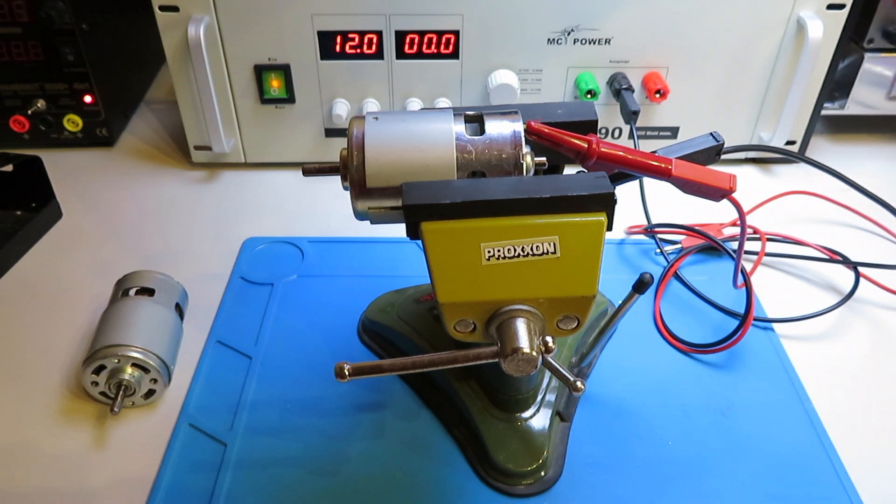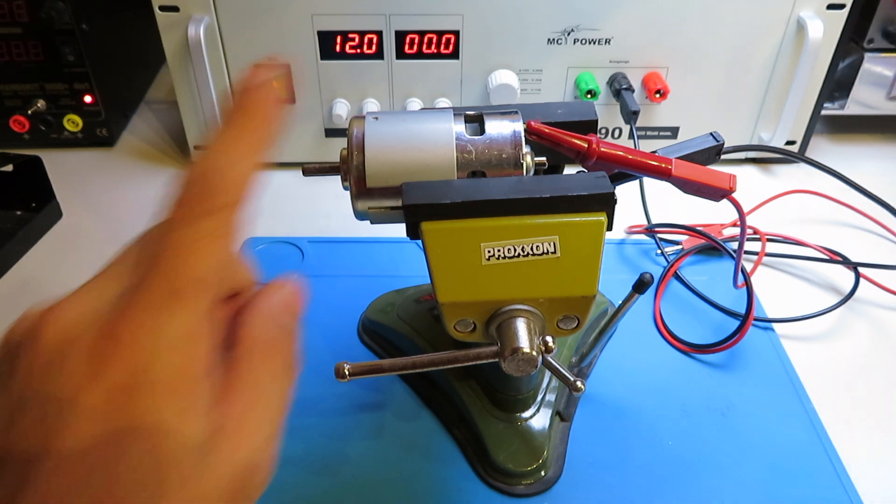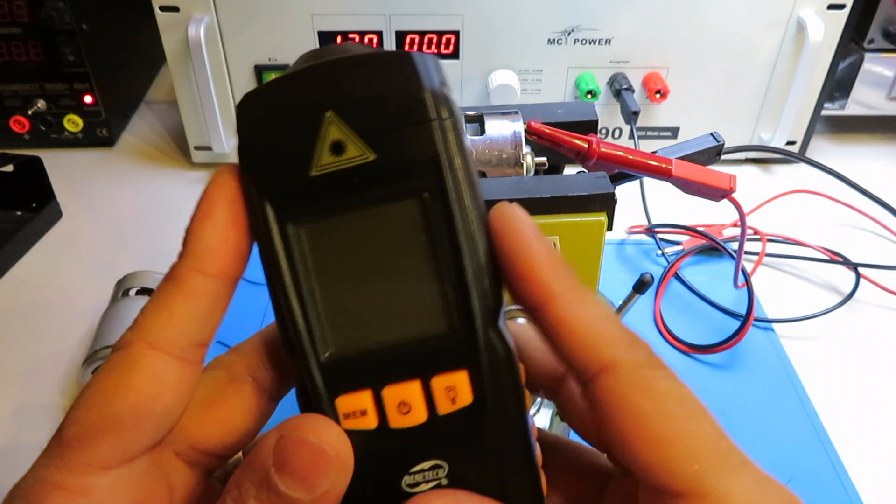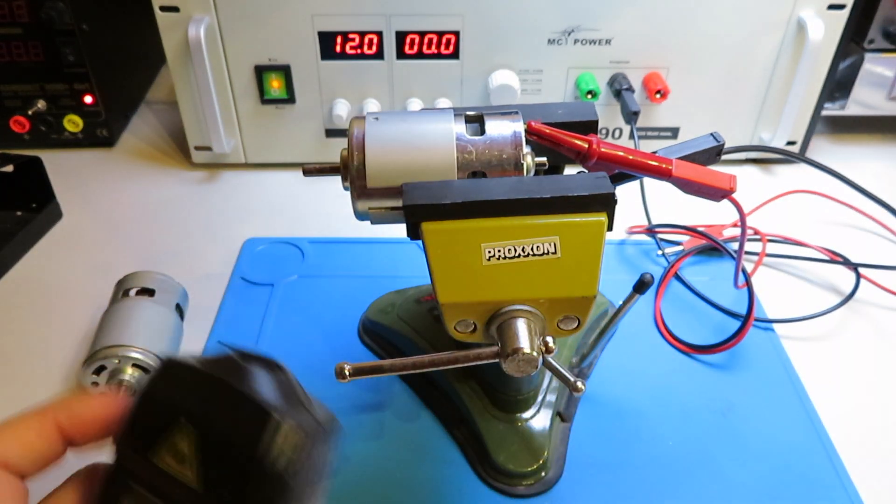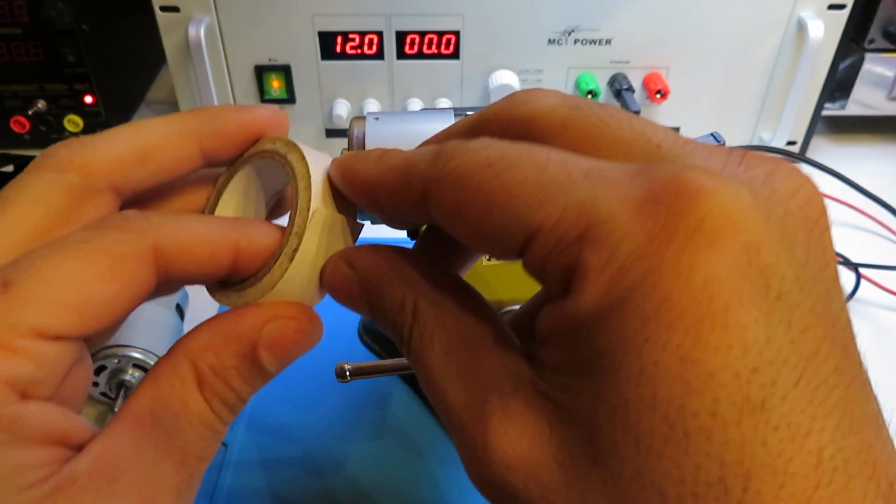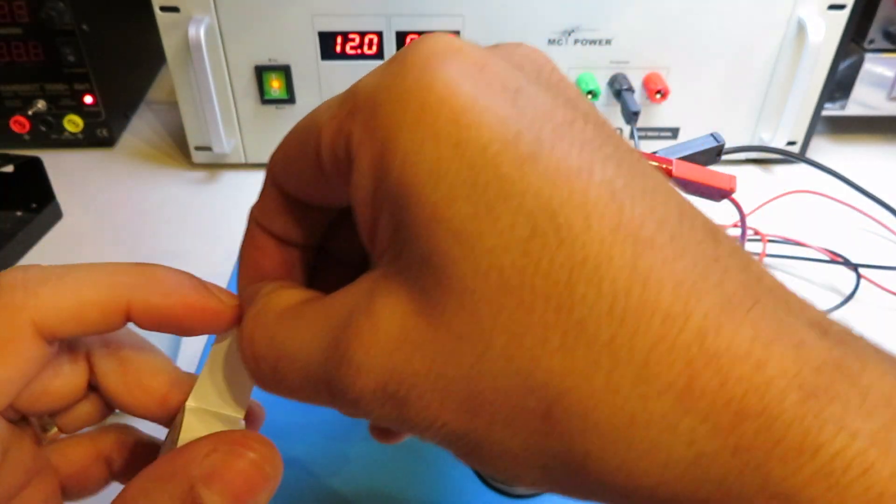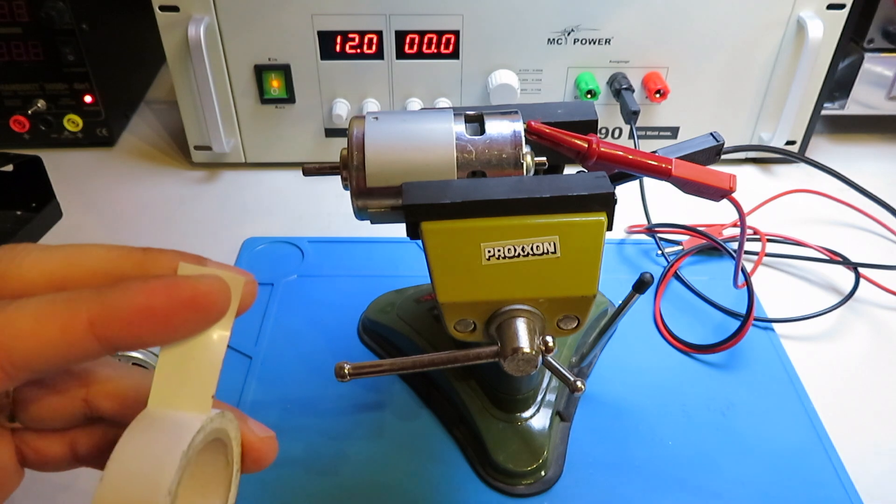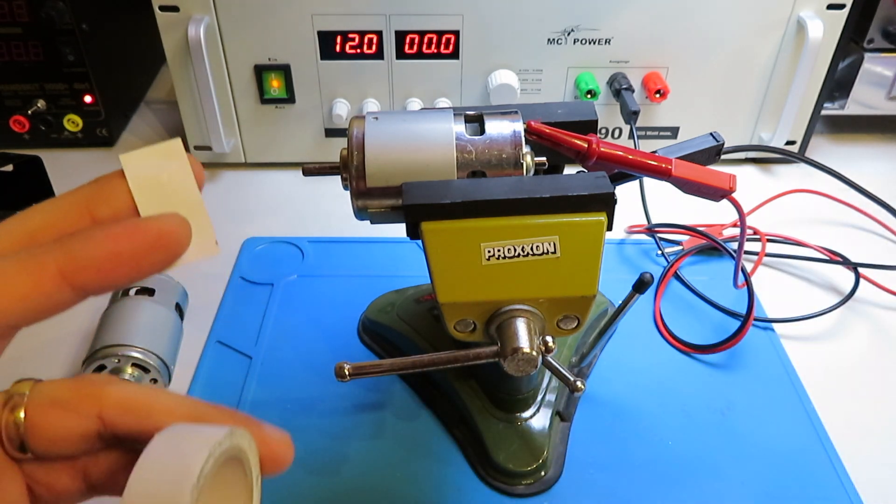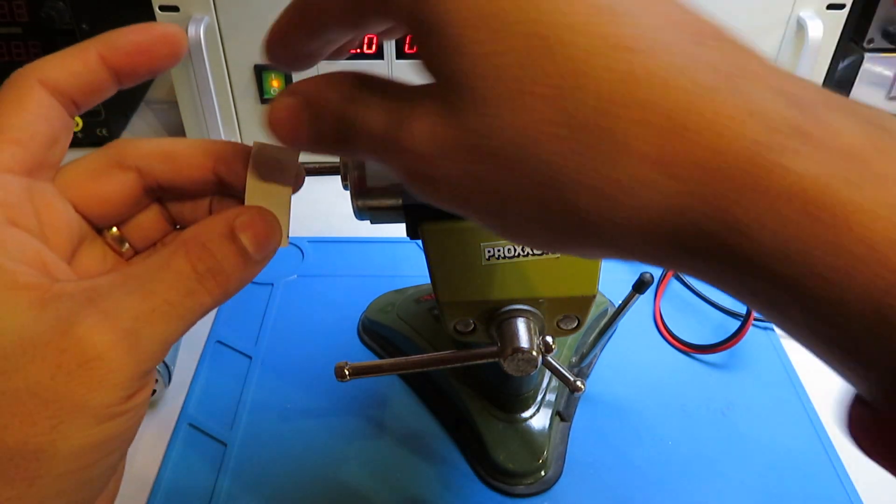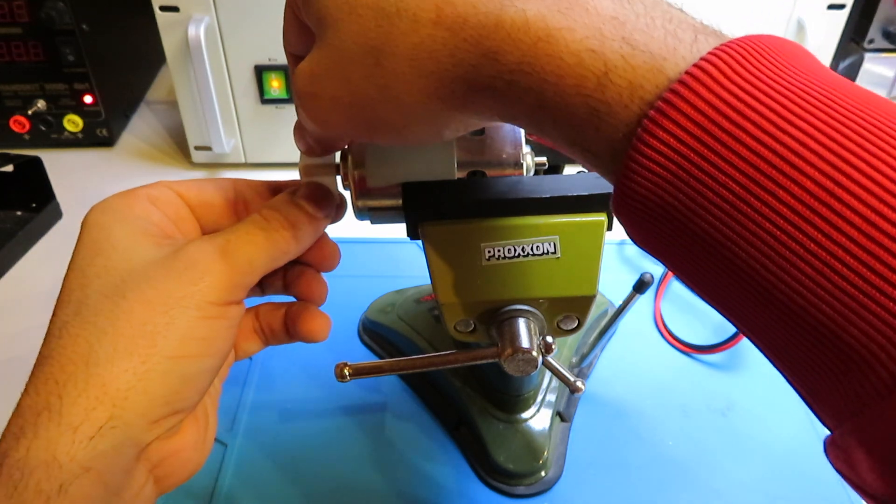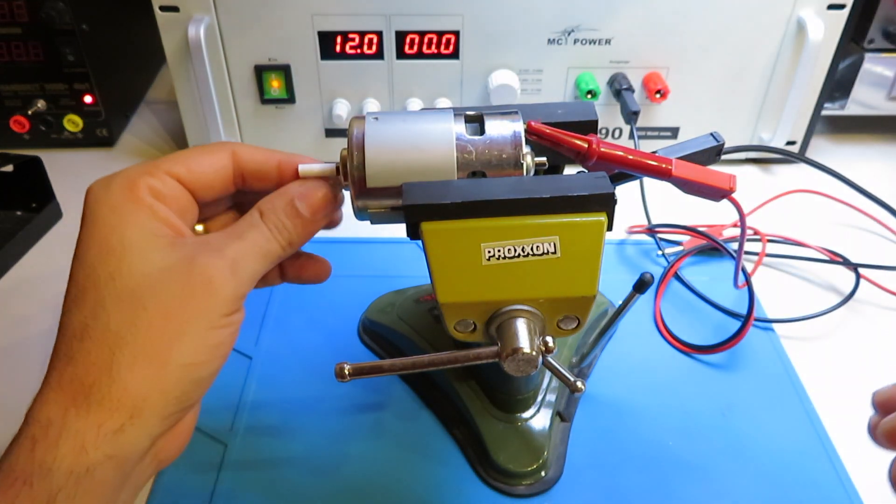So now let's measure the RPM of this motor and I'm going to use this contactless tachometer. So we need to put a piece of tape on the shaft so that you can use the tachometer. So let's put this piece of tape in here.